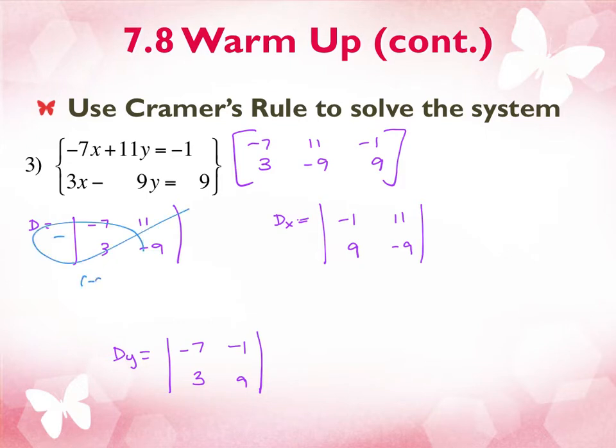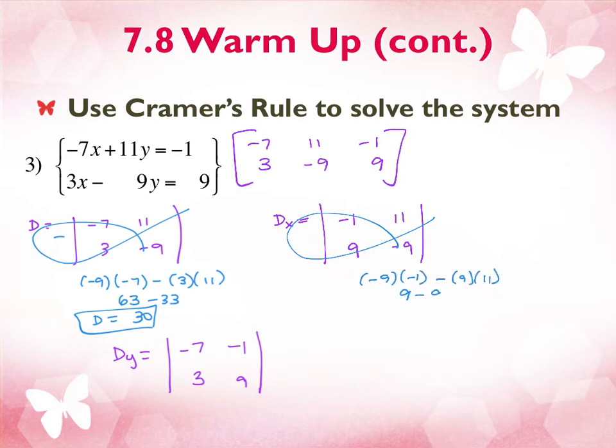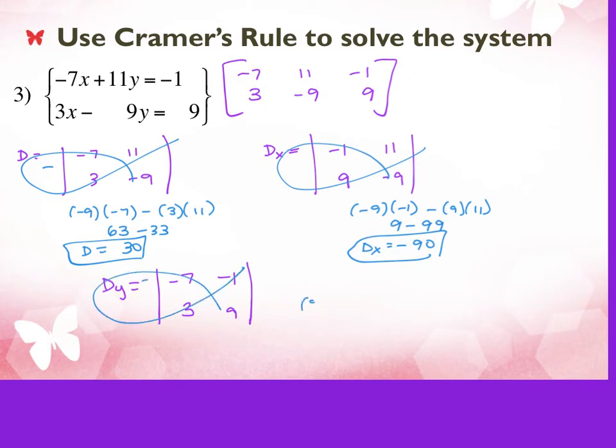To the little fish, negative 9 times negative 7 minus 3 times 11. And I get 63 minus 33, which is 30. That's my D. Go to the next one. Negative 9 times negative 1 minus 9 times 11, 9 minus 99. And I get negative 90. That's D sub x. And then the last one. Do it again. 9 times negative 7 minus 3 times negative 1. Negative 63 minus a negative 3 becomes positive 3. Negative 60. That's D sub y.